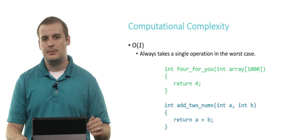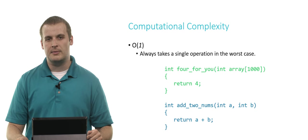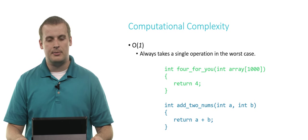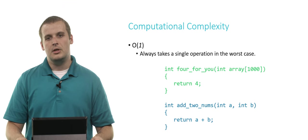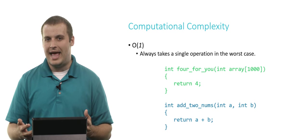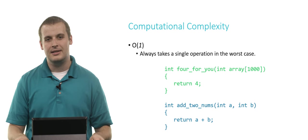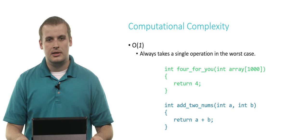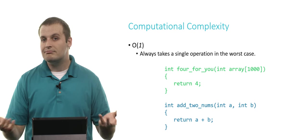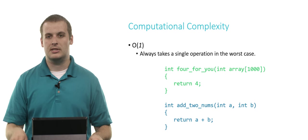So let's take a little more concrete look at some simpler computational complexity classes. So we have an example, or two examples here, of constant time algorithms, which always take a single operation in the worst case. So the first example, we have a function called for you, which takes an array of size 1,000. But then apparently doesn't actually look at it. It doesn't really care what's inside of it, of that array. It always just returns four. So that algorithm, despite the fact that it takes 1,000 elements, doesn't do anything with them. It just returns four. It's always a single step.